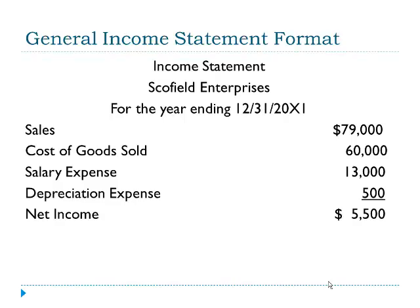The sales figure of $79,000 is something that increases net income — we know that because we know what sales are. The next three items, cost of goods sold, salary expense, and depreciation expense, all decrease net income, and we understand that because we know what those expenses are. So on our income statement we have one revenue and three expenses. We're subtracting the expenses from the revenues to get net income of $5,500.